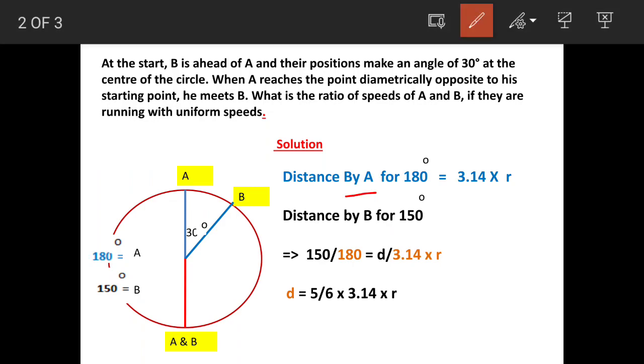So distance of A, when he is opposite to his start point, his angle with respect to his initial position is 180 degrees. The distance at 180 degrees of the circle is going to be 50 percent of 360 degrees. For 360 degrees it is 2 into 3.14 into R, where R is the radius.